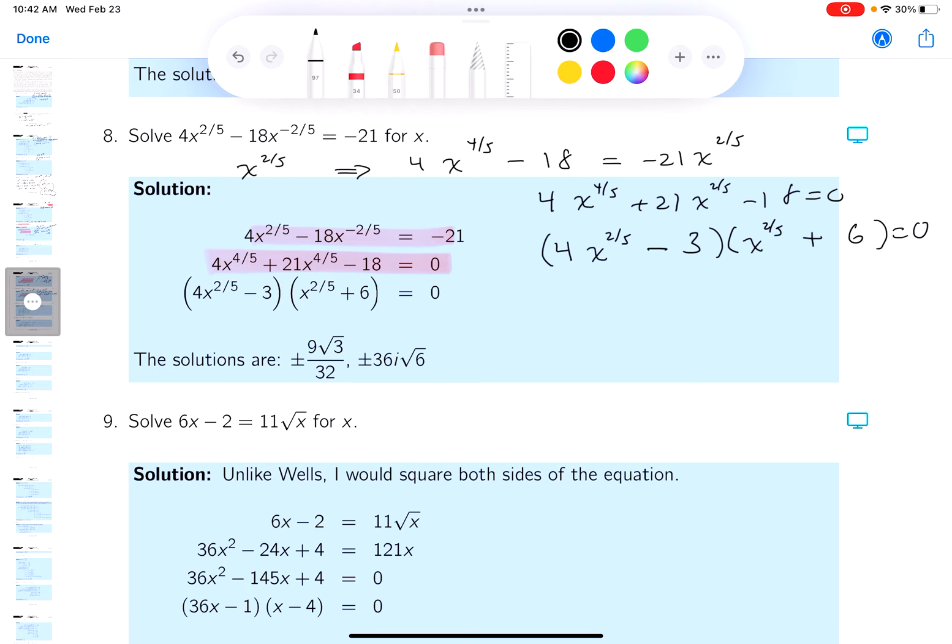What do you get over here? And again, it's kind of nightmarish, but you could write it down. And what do you get over here? Let's see, 4x to the two-fifths equals 3. And then you get x to the two-fifths equals minus 6.